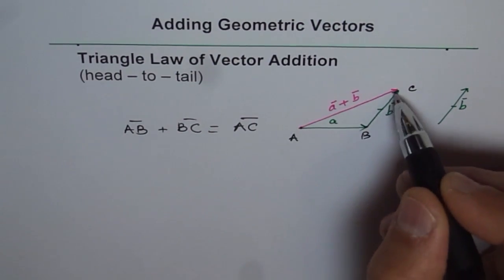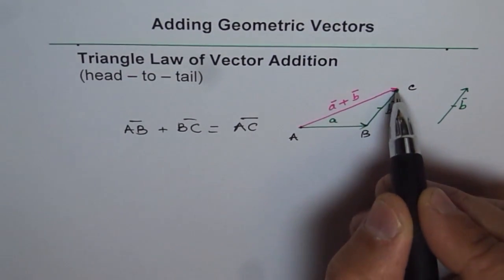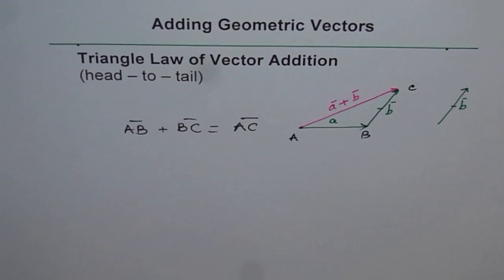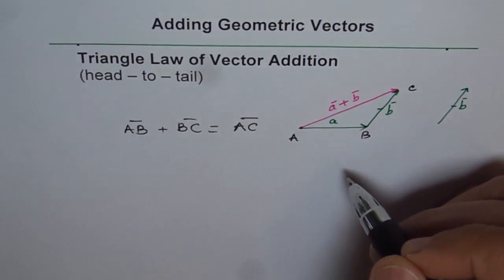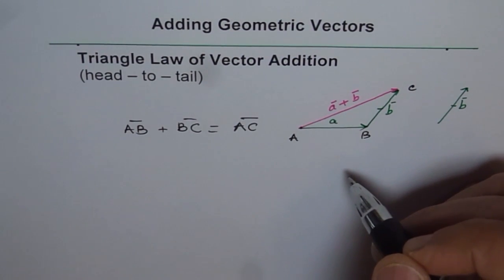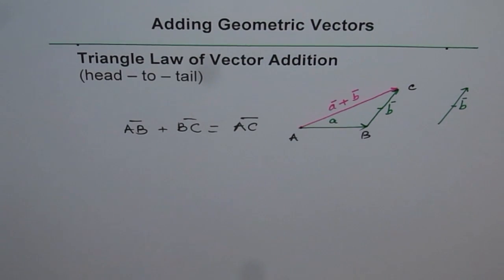If I had drawn vector B from the same starting point and completed the shape, it would have formed a parallelogram, and that diagonal would give me A plus B. So in a way, both are very similar, and they find wide applications. We'll have a few examples and then real-life situations solved using the triangle law or parallelogram law of vector addition. Thanks and all the best.